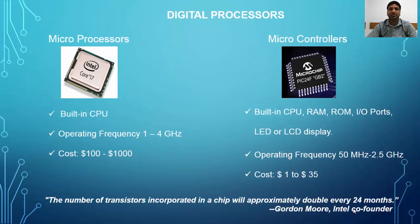Microprocessors are costlier when compared to microcontrollers. They are used mostly in laptops, desktops and supercomputers. It is the cheaper price of microcontrollers which made mobile phones an easy commodity to buy.